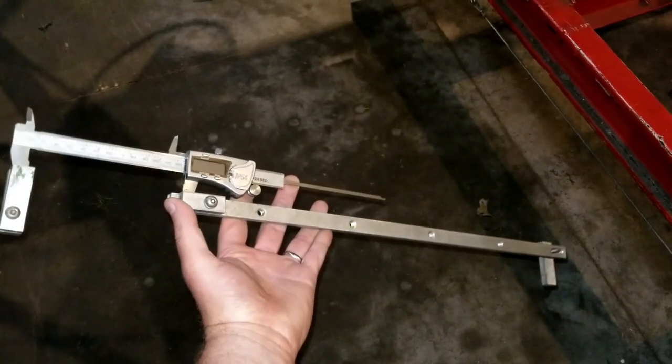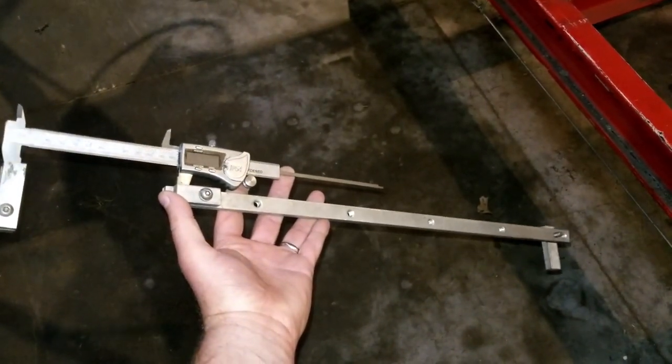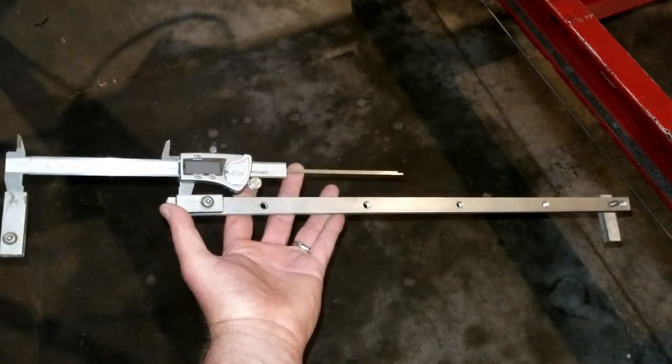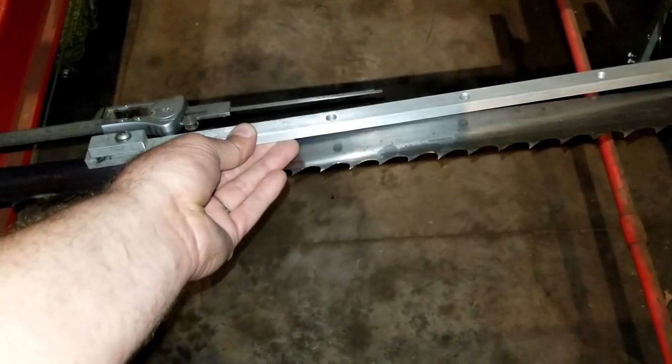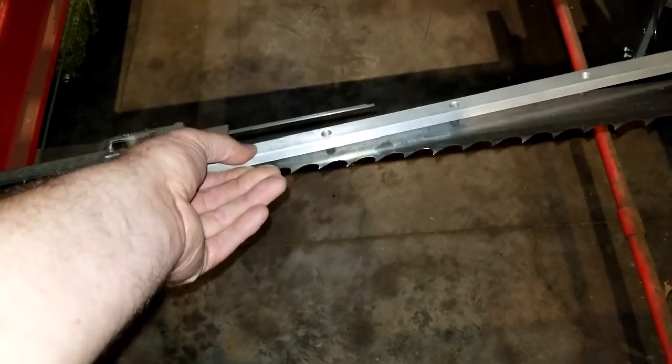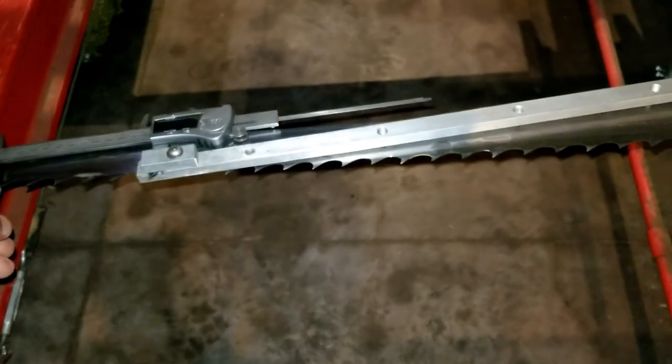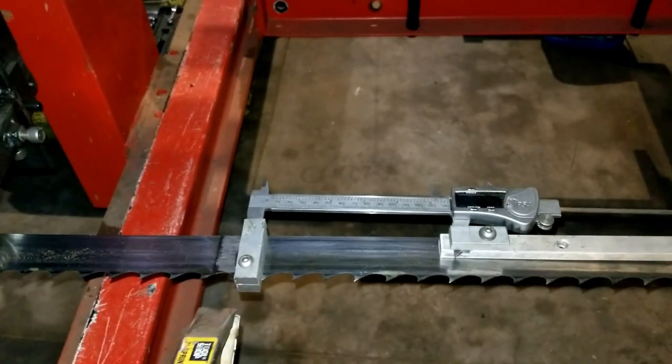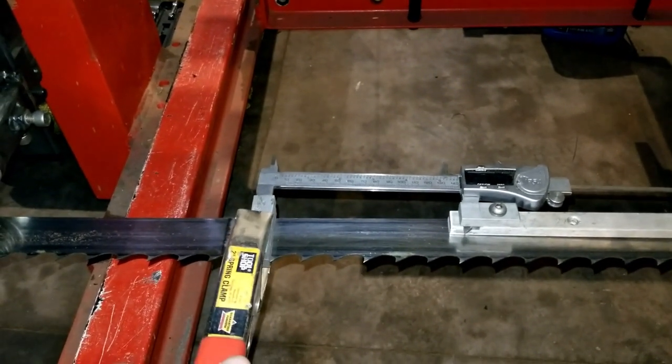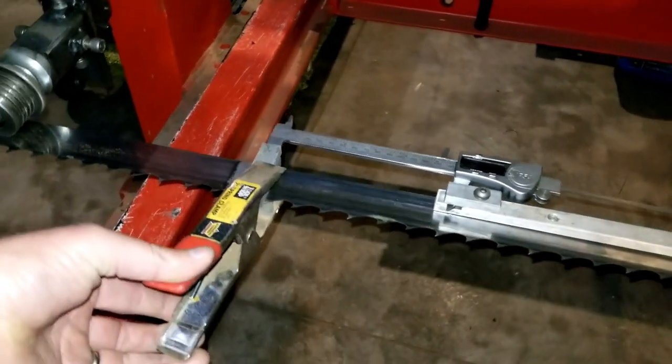So without further babbling, let's get right into the meat of the video. Okay, so here's the device that I created to measure tension on the mill. As you can see, it's basically a digital caliper and it's been extended so I can get a measurement over a greater distance. This just increases the resolution of the measurement.